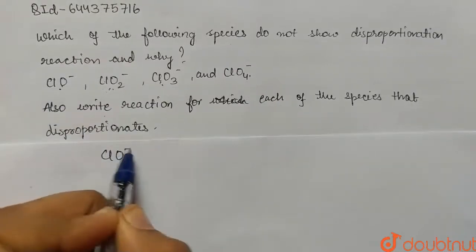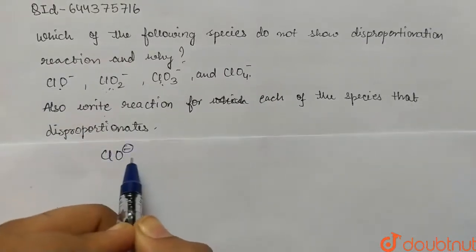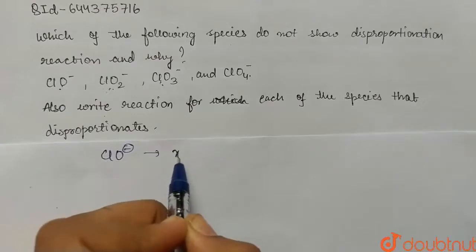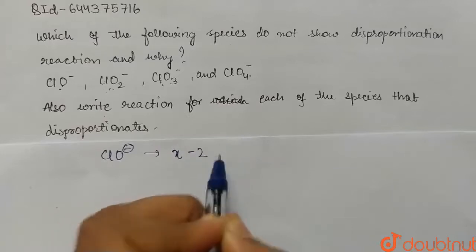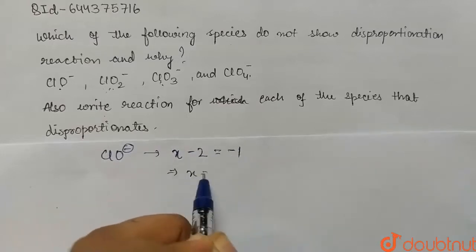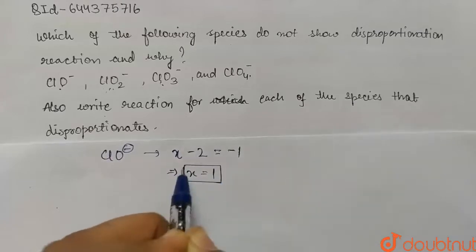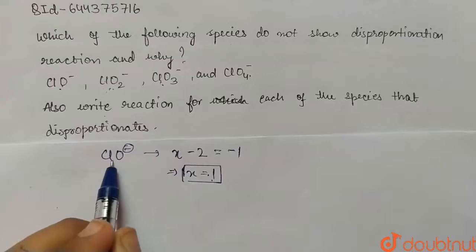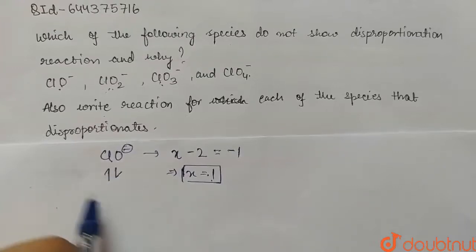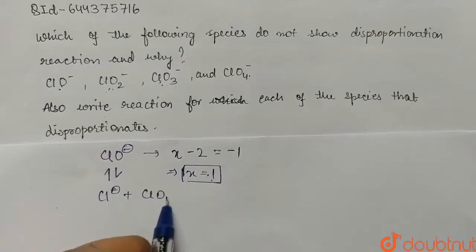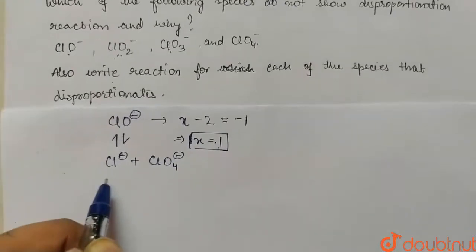First, we have ClO⁻. In the case of ClO⁻, if we calculate the oxidation state of chlorine, it will be x, then we have minus two, and the total charge will be minus one. So from here x comes out to be plus one. Since this is an intermediate oxidation state, ClO⁻ will disproportionate into Cl⁻ and ClO₄⁻.